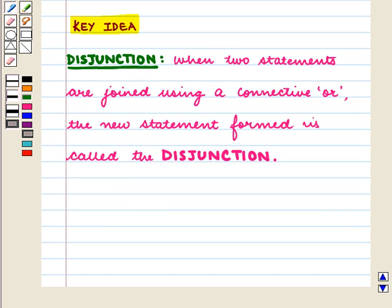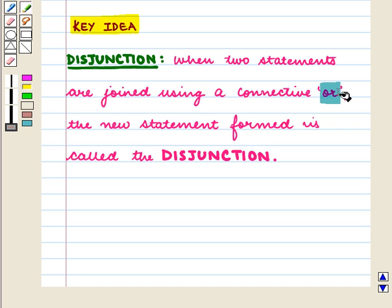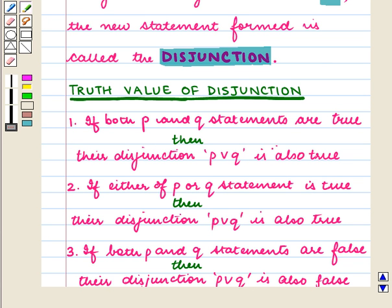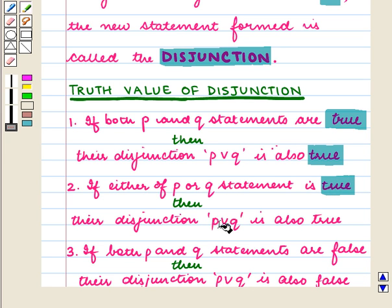As we know, when two statements are joined using a connective OR, the new statement formed is called the disjunction. We know that if both P and Q statements are true, then their disjunction P or Q is also true. If either of P or Q statements is true, then their disjunction P or Q is also true. And if both P and Q statements are false, then their disjunction P or Q is also false.